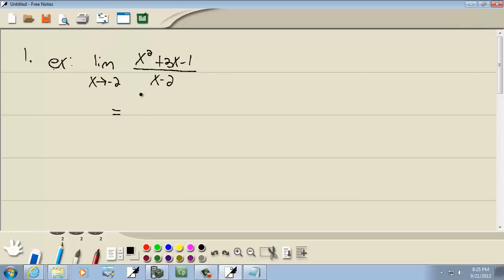Well, with direct substitution, you just plug in the number here for your x. So, we're going to have negative 2 squared plus 3 times negative 2 minus 1 over negative 2 minus 2.